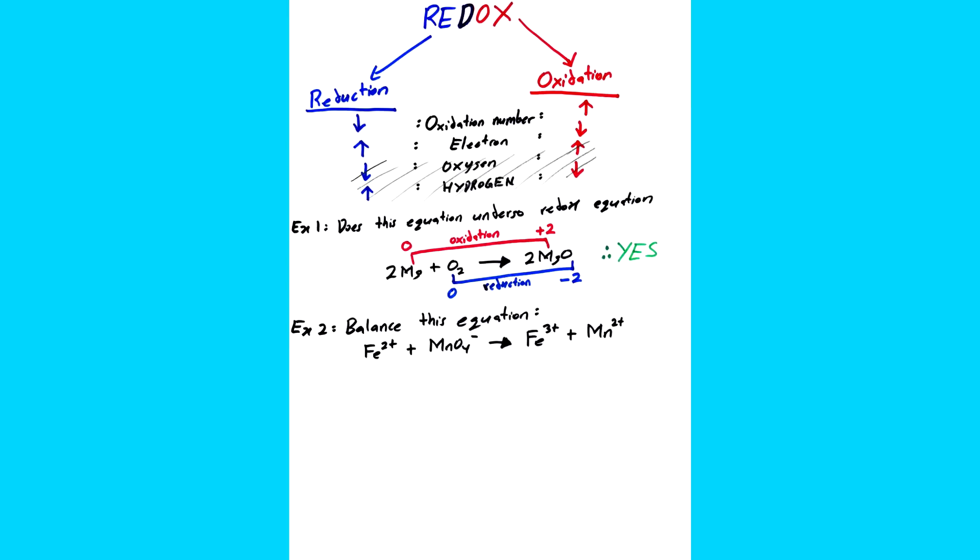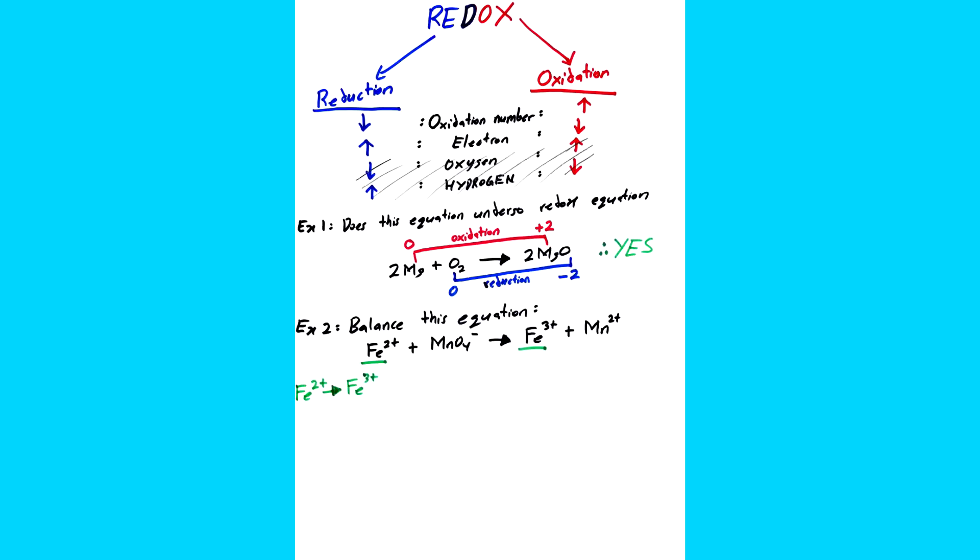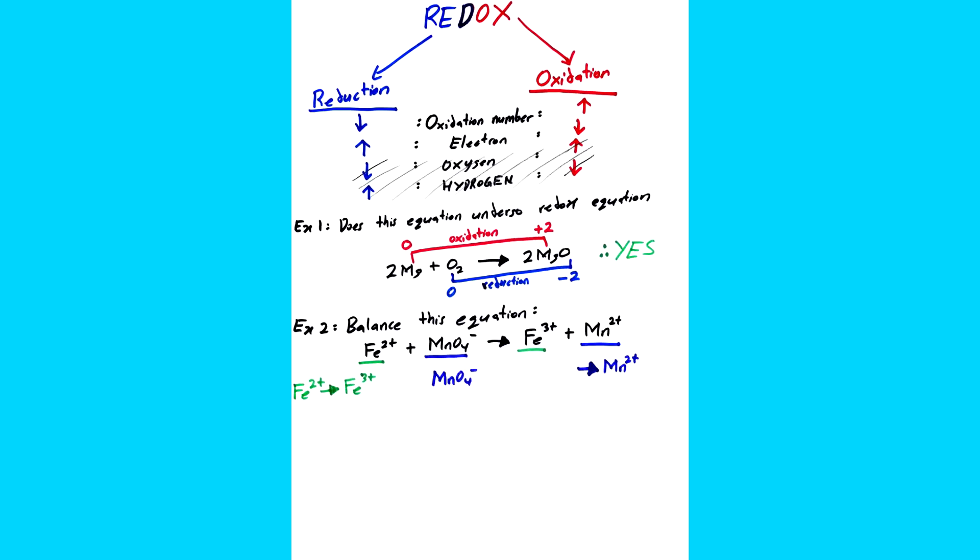Next example, I want you to balance this equation. It's quite a long one, so again pause the video, balance the equation, and then click play again. So basically what you have to do is separate Fe2+, Fe3+, and MnO4- and Mn2+. Basically categorize them according to their compound.